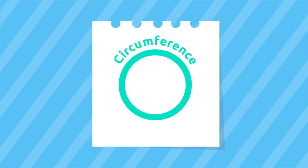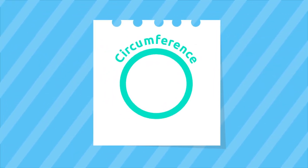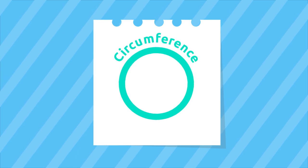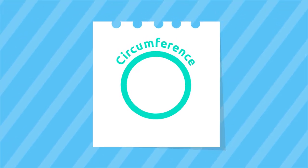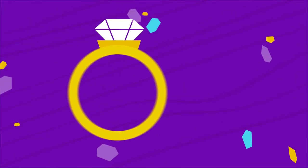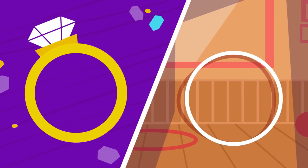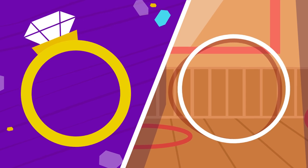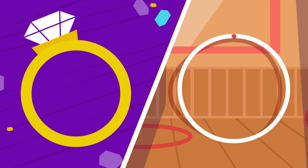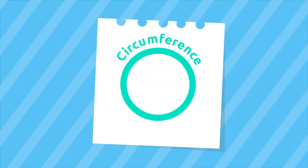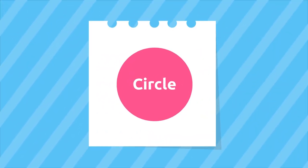The circumference is a curved, closed, flat line whose points are the same distance from the center. Look around you — do you see any circumferences? That's right: this ring or this hoop.